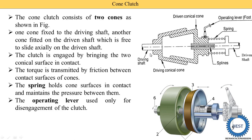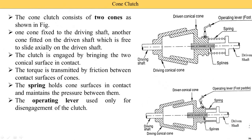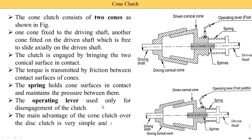When we press the lever, this spring is pressed. Here in the second diagram, when we press the foot pedal, this spring is pressed and the driven cone is pressed. So the driven cone slides on the splines and the driving cone and driven cone are disengaged, so power transmission is stopped from driving shaft to driven shaft. The main advantage of the cone clutch over the disc clutch is that it is very simple and requires less axial pressure to disengage the clutch.